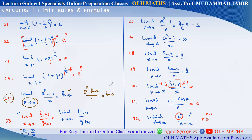This is sufficient. For e^x − 1 over x: it is 0 by 0 form. The derivative of e^x is e^x. Derivative of x is 1. Put the limit x approaches 0: e raised to power 0 is 1. So the answer is 1.